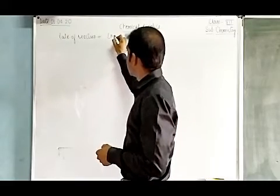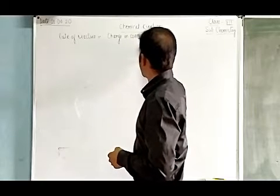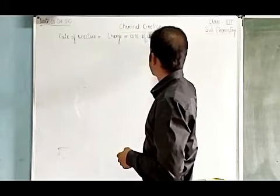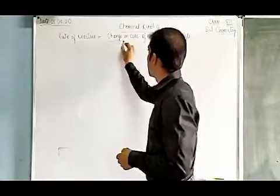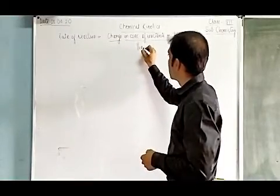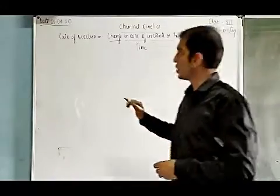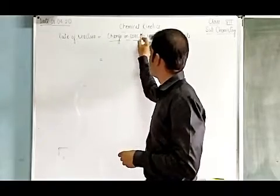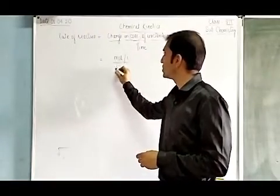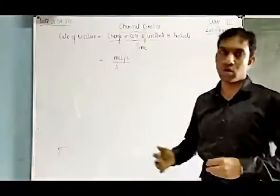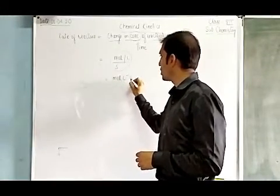We can write it as: change in concentration of reactants or products with respect to time. With this formula we can also find out the unit of the rate of reaction. The concentration term is measured in mole per liter and time is measured in second, minute, or hour. So the unit of rate of reaction becomes mole per liter per second.